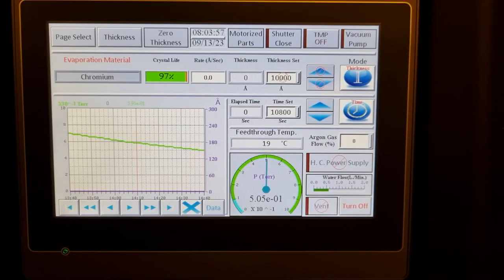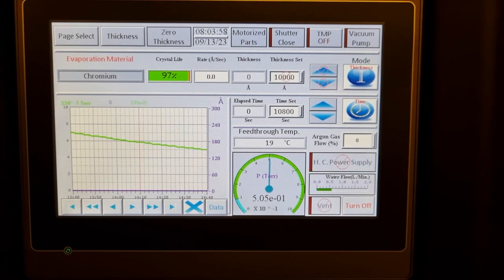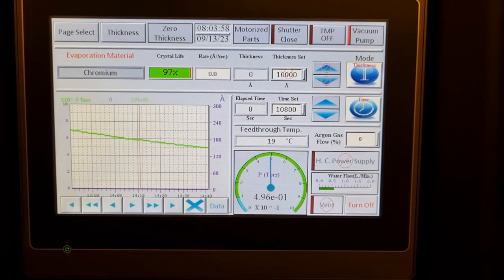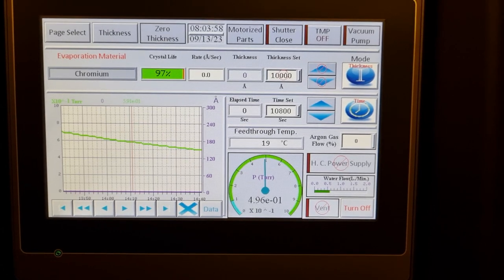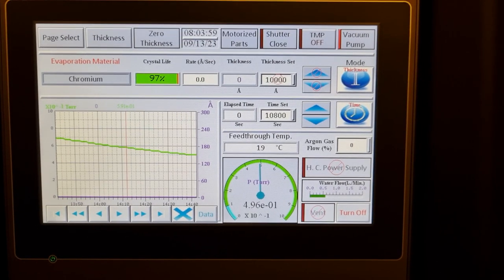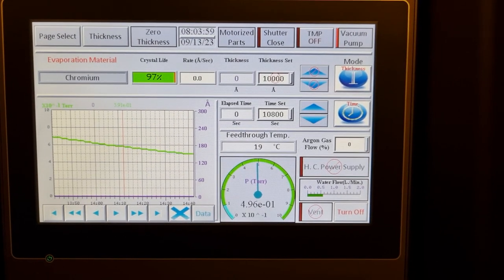After venting and removing your samples, close the chamber. Turn on the vacuum pump and pump it down using the mechanical pump to below 1 torr. Turn off the water flow using the valve behind the machine and turn off both the electrical control screen and the power at the switch.